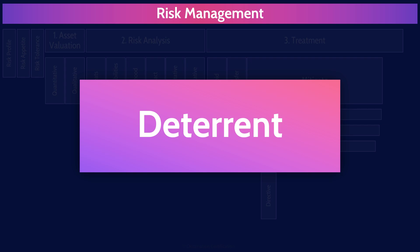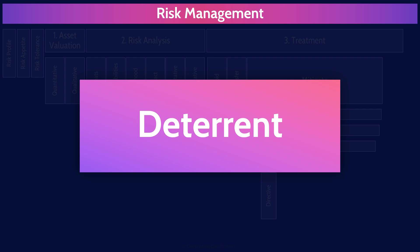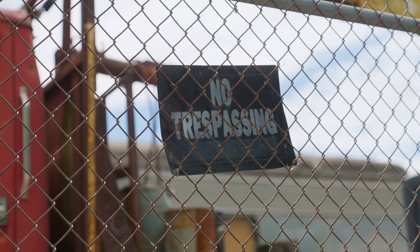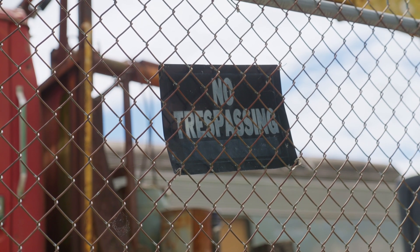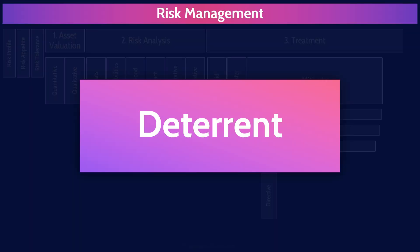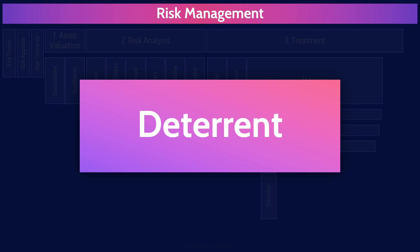Deterrent controls discourage individuals from engaging in risky behavior — the keyword here is 'discourage.' They don't prevent someone from doing something, they discourage them. A perfect example is a sign that says 'private property, all trespassers will be shot' — it wouldn't prevent someone from walking onto a property, but it would definitely discourage them. Preventative controls aim to prevent or stop a risk from occurring. Examples include razor wire-topped fences, login mechanisms, and firewalls.